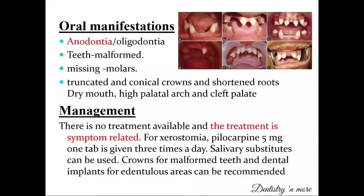Management is highly symptomatic. For xerostomia, pilocarpine 5 mg thrice daily is prescribed along with salivary substitutes. For truncated conical or malformed teeth, crowns are placed, and dental implants are used for edentulous areas.